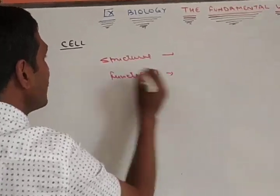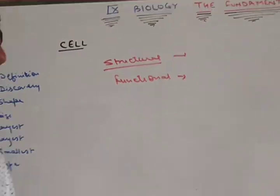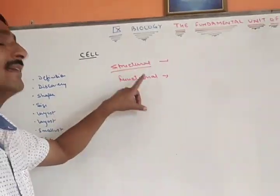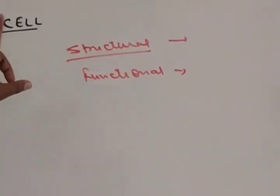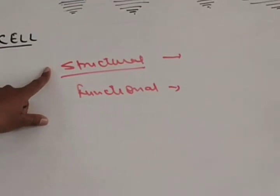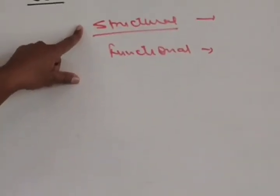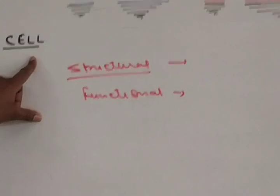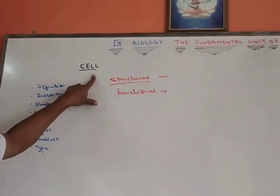Now, first let me explain what is the meaning of structural here. It means all living organisms are made up of cell and cell structures. Outside the cell, life does not exist, and hence all living organisms, their structures, their body parts, their organs are made up of cells. That's why cell is called as structural unit of all living organisms.